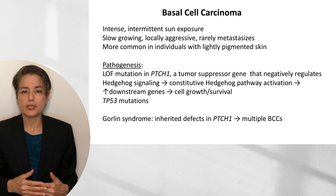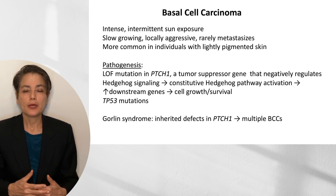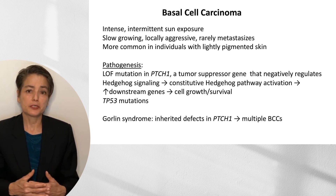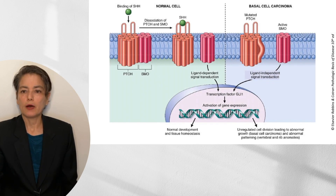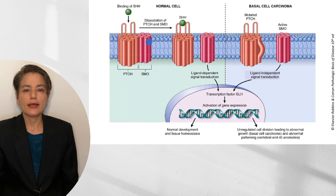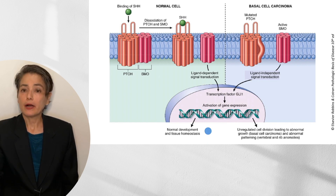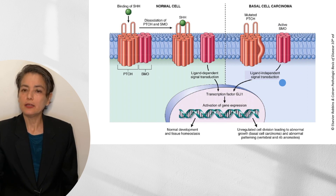The pathogenesis of basal cell carcinoma involves loss-of-function mutations in PTCH1 (Patch 1), a tumor suppressor gene that negatively regulates hedgehog signaling. This leads to constitutive activation of the hedgehog pathway, increasing expression of downstream genes, leading to cell growth and increased survival. TP53 mutations are also seen. A familial syndrome highlighting PTCH1's importance is Gorlin syndrome, where inherited defects lead to multiple basal cell carcinomas. When Patch is mutated, it no longer inhibits SMO (Smoothened), which becomes constitutively active — leading to ligand-independent signal transduction through the GLI-1 transcription factor, unregulated cell division, and basal cell carcinoma.